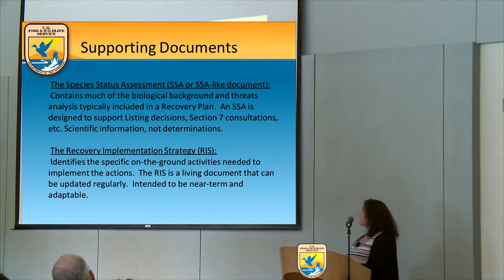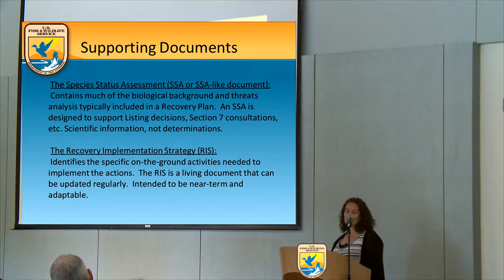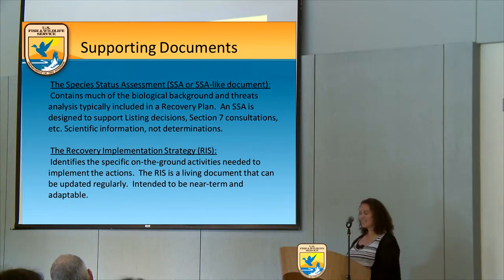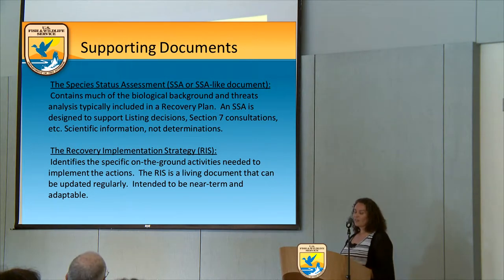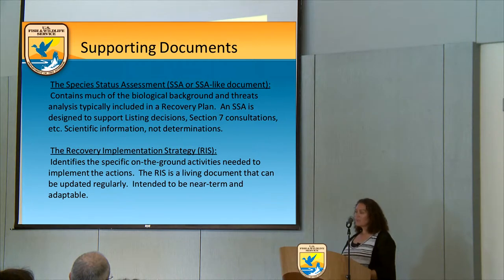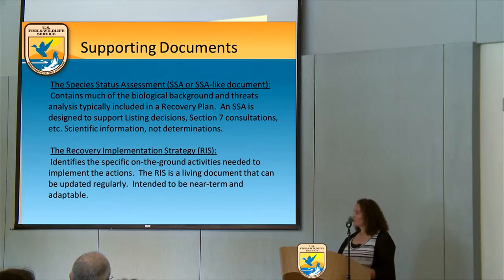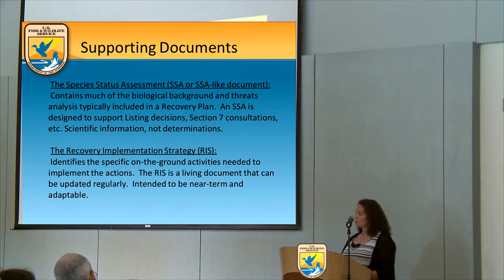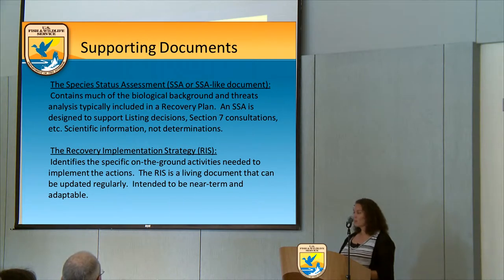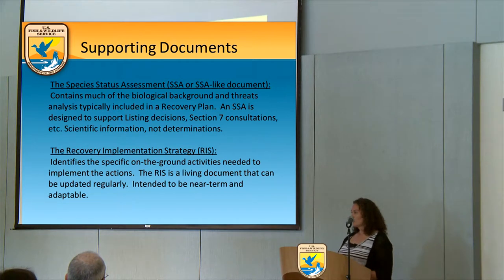The second supporting document is the Recovery Implementation Strategy, or RIS, which identifies the on-the-ground activities needed to implement the actions outlined in the recovery plan. The RIS is a living document that can be updated regularly, developed cooperatively with partners since it identifies who could potentially be implementing these actions. The introduction of the recovery plan references the SSA and other supporting documents as the basis for the elements of the recovery plan but doesn't duplicate the SSA.